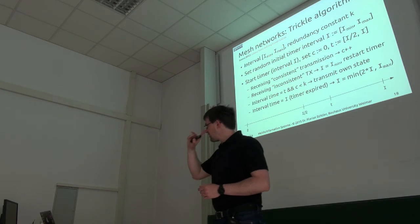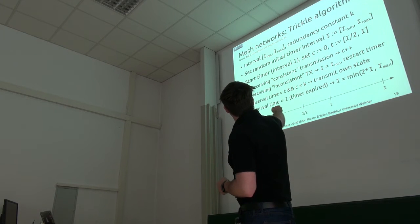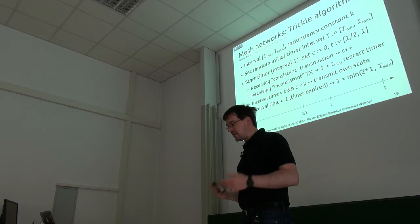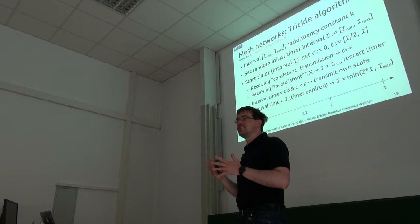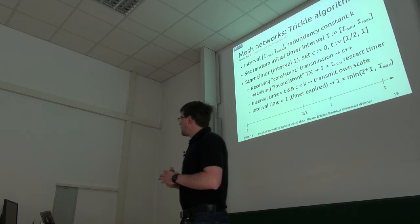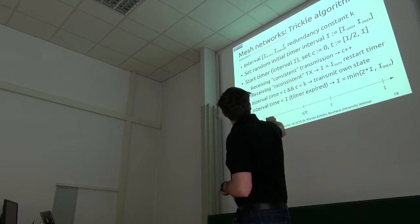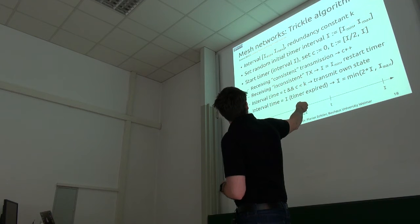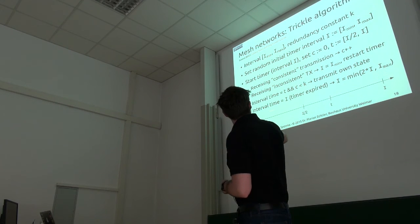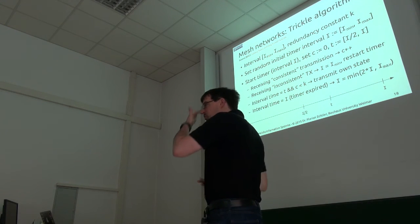Okay, so let's briefly go through how this algorithm actually works. We have three parameters. We have a time interval and a constant k. This is the redundancy constant, which tells you basically how often the nodes should transmit, even if it looks like the network is already consistent. So first of all, what's done is that a random time interval is selected somewhere between the minimum and the maximum. That's designated here. And then I start this timer.